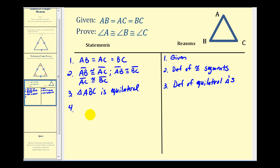Now as we said just a minute ago, every equilateral triangle is also an isosceles triangle. And we just proved the isosceles triangle theorem that tells us if two sides of a triangle are congruent, then the opposite angles are congruent.